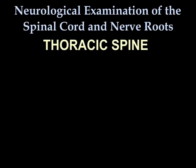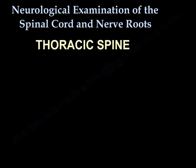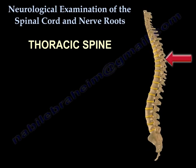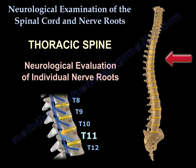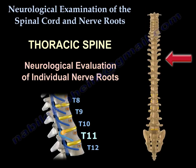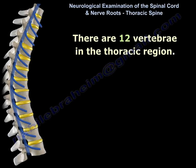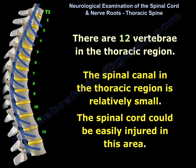Neurological examination of the spinal cord and nerve roots — the thoracic spine. Neurological evaluation of individual nerve roots. There are 12 vertebrae in the thoracic region. The spinal canal in the thoracic region is relatively small, and the spinal cord could be easily injured in this area.